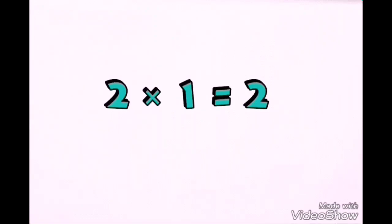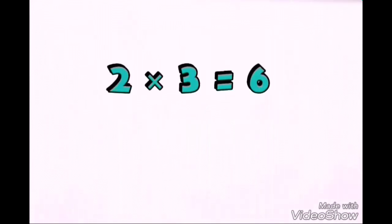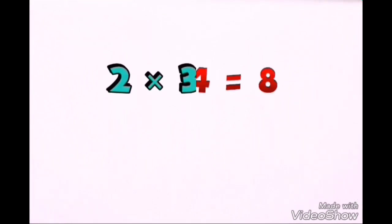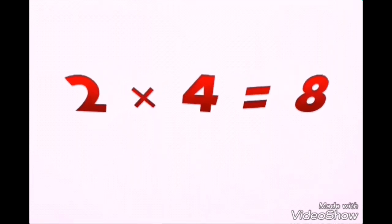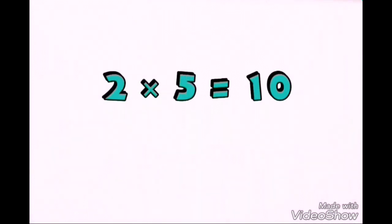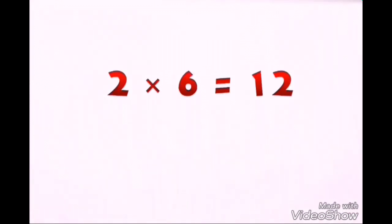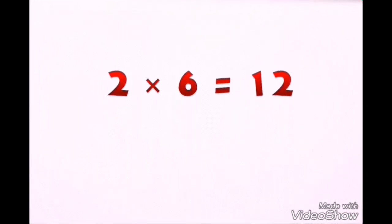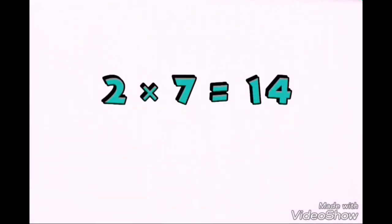Two ones are two. Two twos are four. Two threes are six. Two fours are eight. Two fives are ten. Two sixes are twelve.